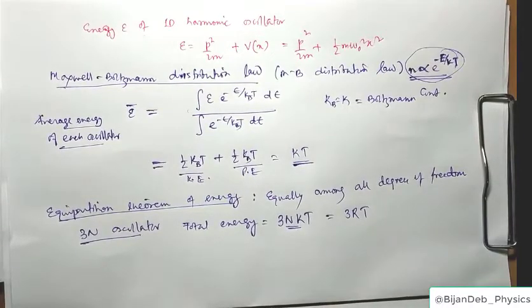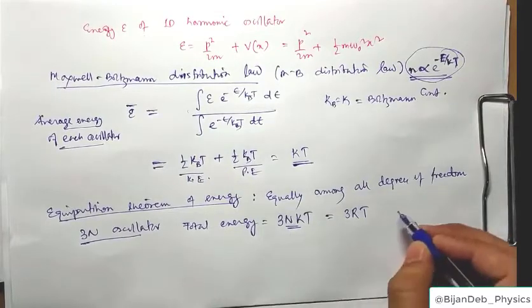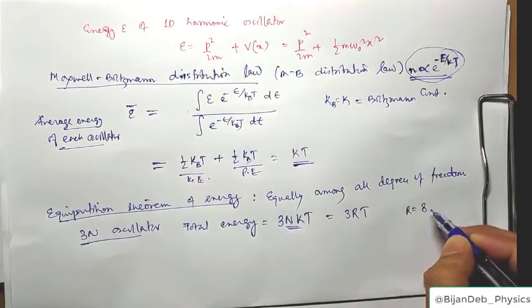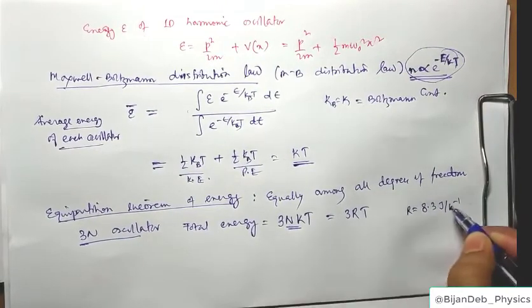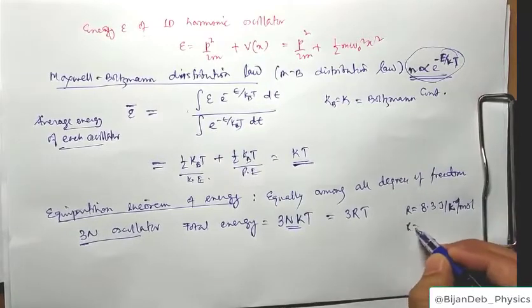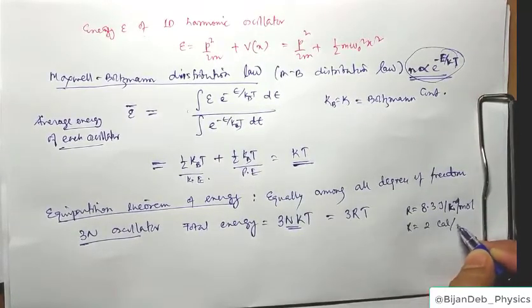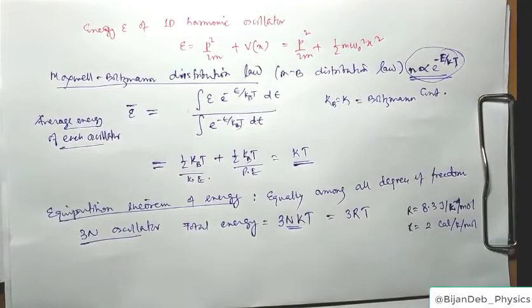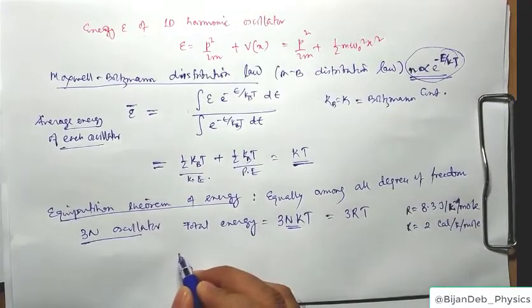We can write 3NkT = 3RT, since Nk = R (the molar gas constant). The value of R is 8.3 joules per kelvin per mole in SI units, or equivalently 2 calories per kelvin per mole in CGS units. So the total molar energy is 3RT.